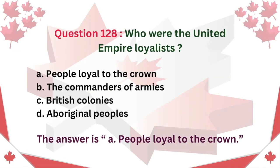Question 128: Who were the United Empire Loyalists? A. People loyal to the Crown. B. The commanders of armies. C. British colonies. D. Aboriginal peoples. The answer is A: People loyal to the Crown.